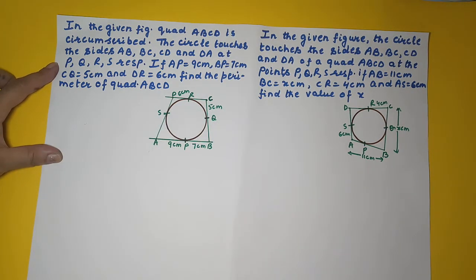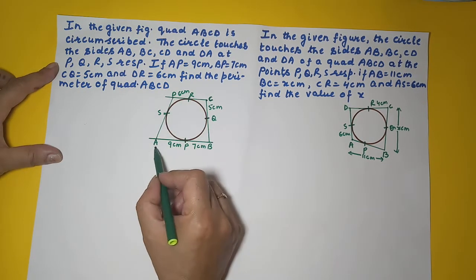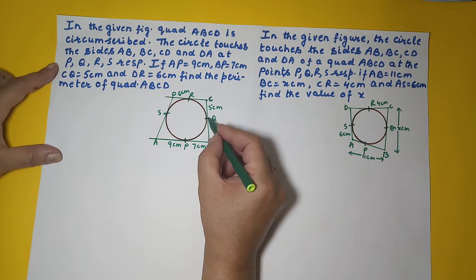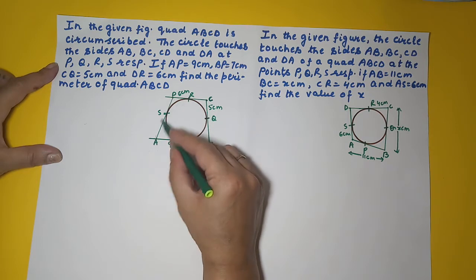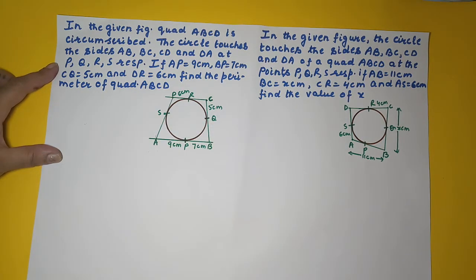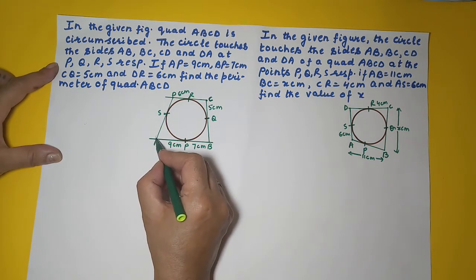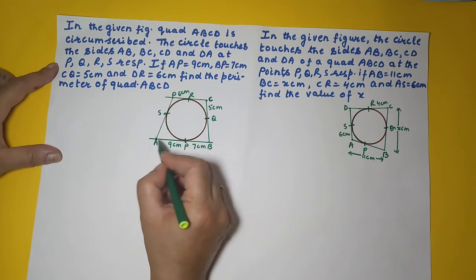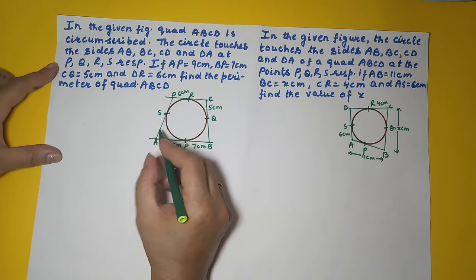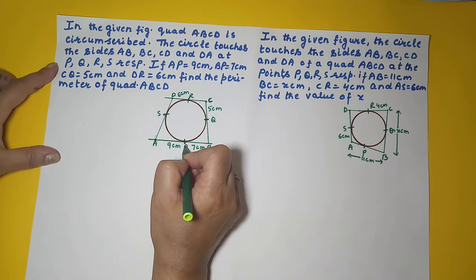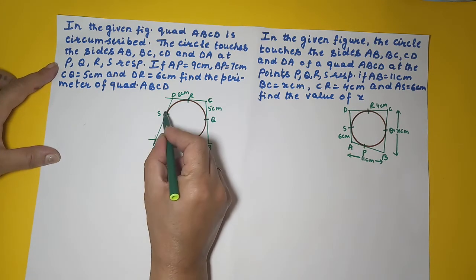How do we find the perimeter? We add up all the sides. So the perimeter will be AB plus BC plus CD plus DA. For that, we need measurements of all the sides, but we don't have BQ, CR, or AS. Looking at point A as the external point, AS and AP are two tangents drawn to this circle, so AP equals AS. Since AP is 9, AS becomes 9 centimeters.